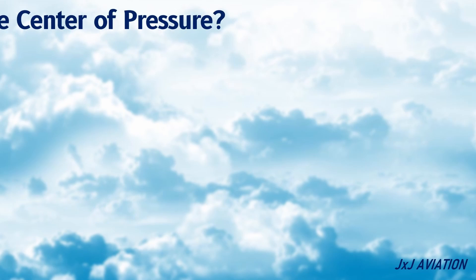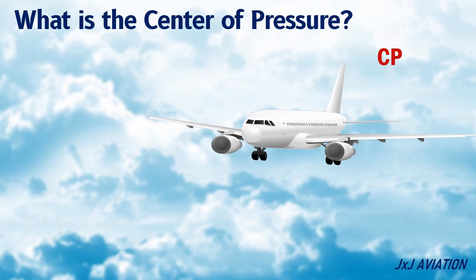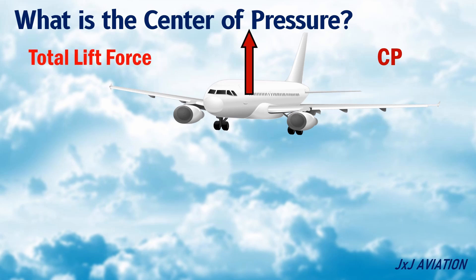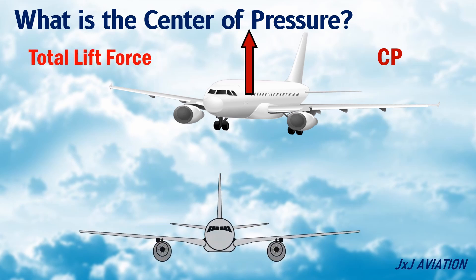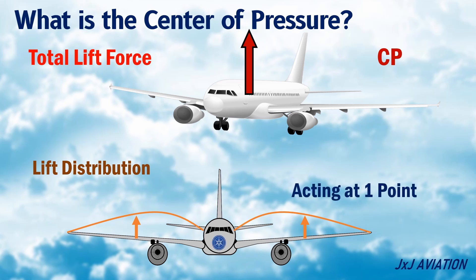What is the center of pressure or CP? The center of pressure in an aircraft is a point where the total lift force can be considered to be acting. If we consider a typical aircraft wing, the lift distribution will be as shown here. If this entire lift force is considered to be acting at a particular point, it is called the center of pressure.